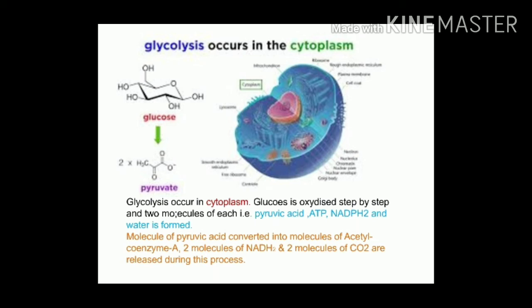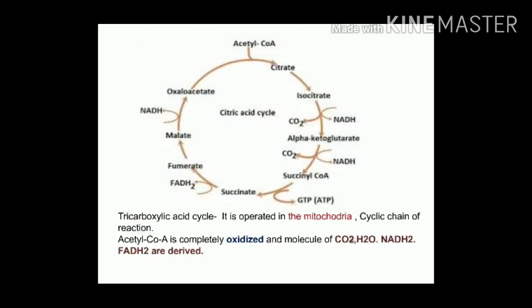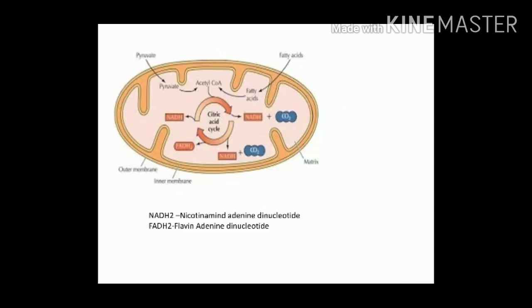Second is the tricarboxylic acid cycle. When acetyl coenzyme A molecules enter the mitochondria, the tricarboxylic acid cycle chain reaction takes place. The acetyl part of acetyl coenzyme A is completely oxidized, releasing molecules of carbon dioxide, H2O, NADH2 and FADH2.